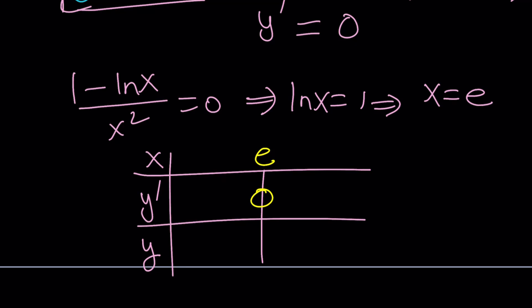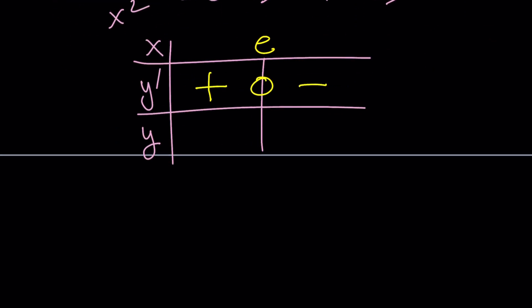And if you look at it carefully, because of the presence of 1 minus ln x, if x is greater than e, ln x will be greater than 1, and 1 minus ln x is going to be negative. So here we have a negative sign, and here we have a positive sign, which means for y, if y prime is positive on an interval, then y should be increasing. Otherwise, it's going to be decreasing. Of course, it could also be constant, but it doesn't happen because we don't have y prime being 0 on an interval.